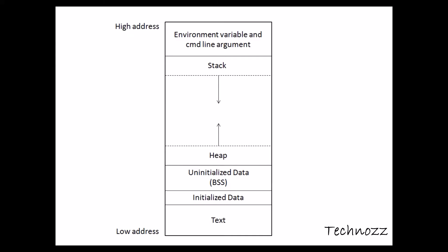In an OS environment, each process has access to almost all the memory it can use — from lower address to higher address. For example, the lower address could be zero and the highest would be the maximum address range.